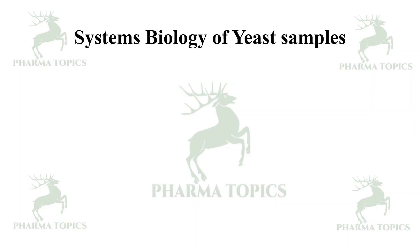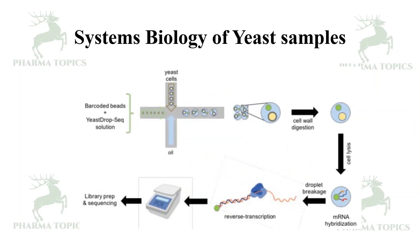In systems biology of yeast, yeast samples are taken and barcoded with barcoded beads. The sample is run, the yeast cell wall is digested with cell lysis, then it undergoes mRNA hybridization and reverse transcription. With the help of bioinformatics tools, a library can be prepared and DNA or protein sequences can be determined.